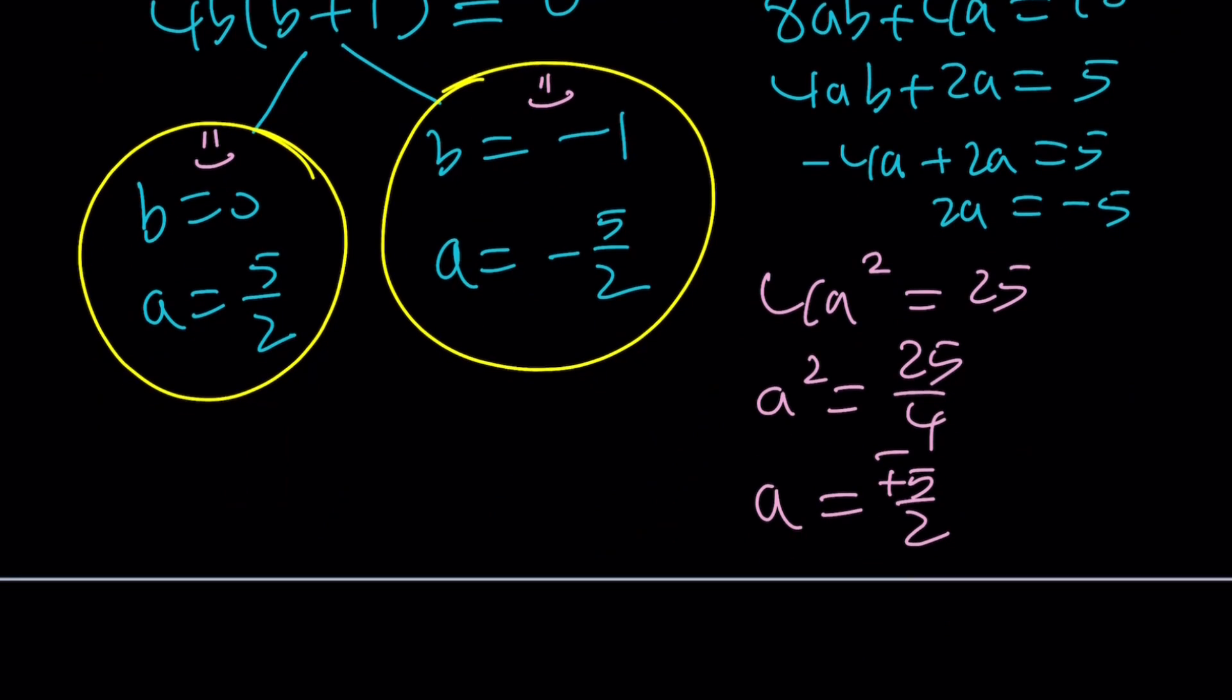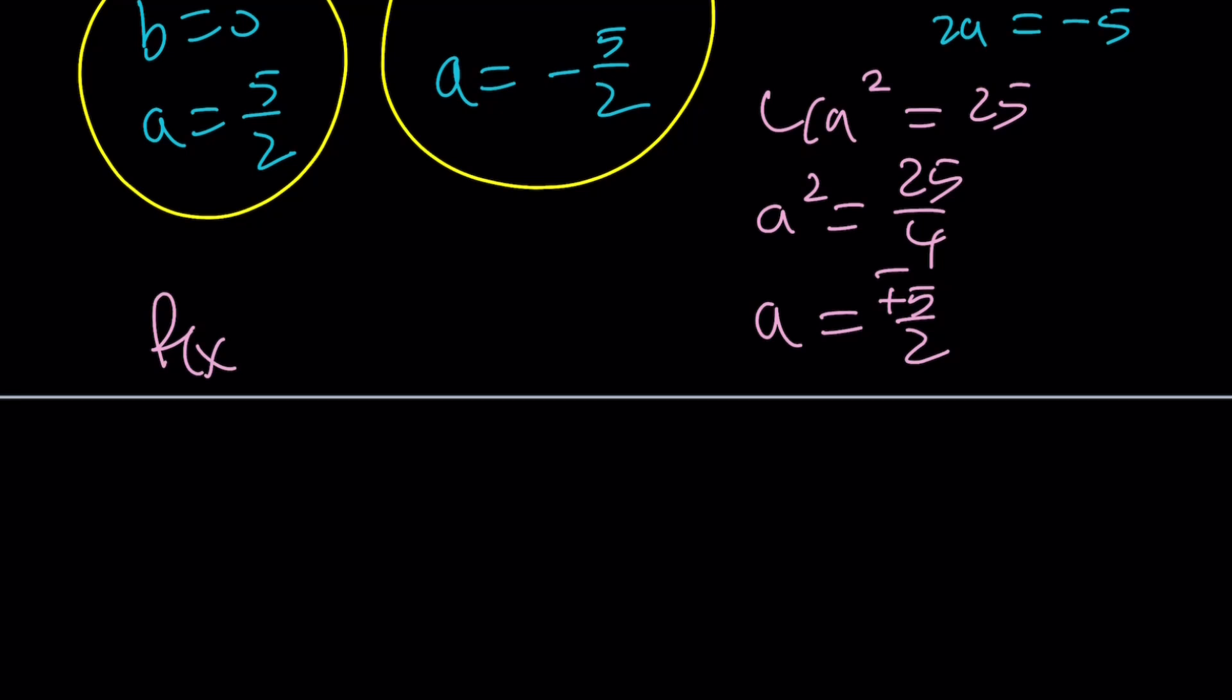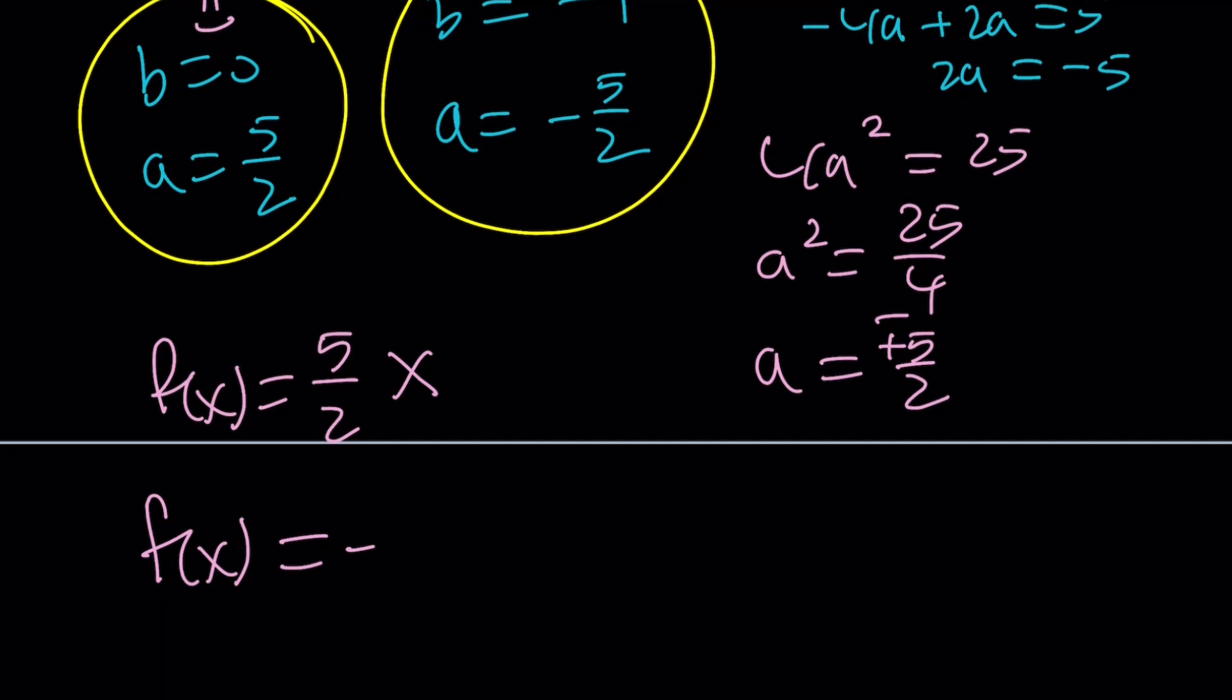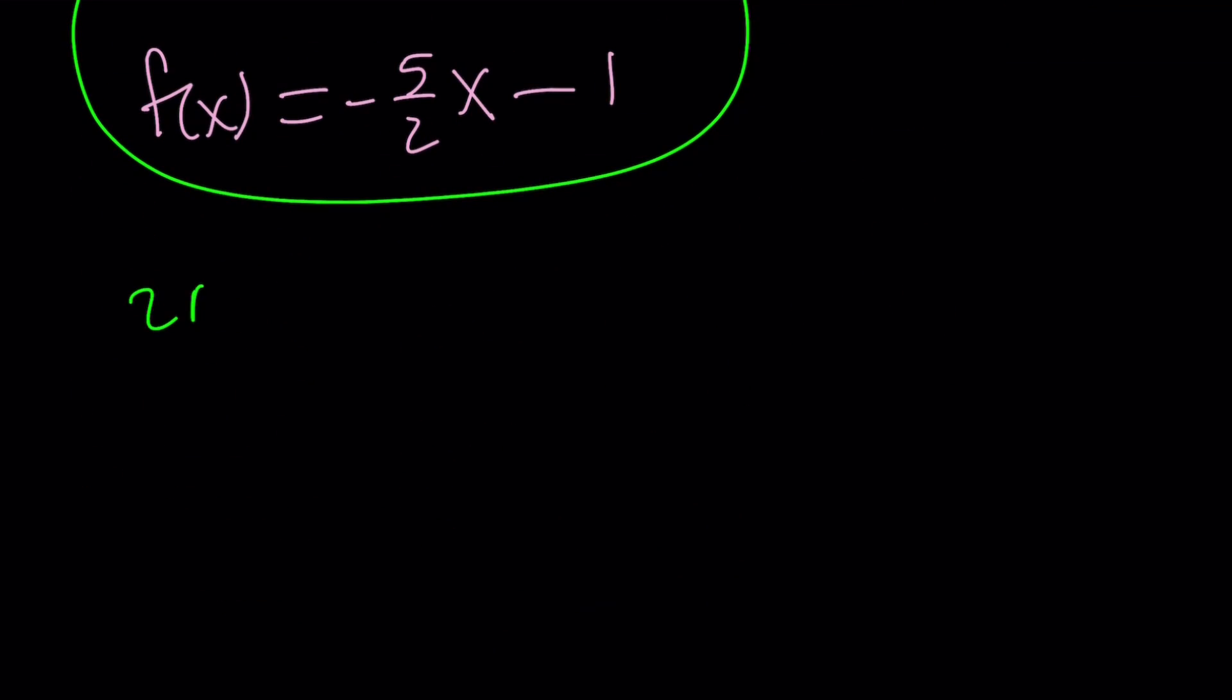Well, our expression f(x) was ax+b. So, the first equation gives us (5/2)x + 0, which is (5/2)x or 5x/2. And the second one gives us ax, which is -5x/2 - 1. So, both of these equations should satisfy the original problem. And you can go ahead and check out. But, before that or after that, I don't know, we're going to use the second method.